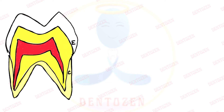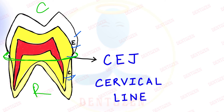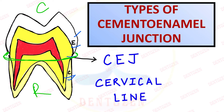Welcome to Dendrozen. C is cementum and E is enamel, and between the two is a junction called the cementoenamel junction (CEJ). This junction divides the crown and root of the tooth at the cervix, or neck of the tooth, and is also called the cervical line. This can be an important theory exam question - you may be asked about the types of cementoenamel junction as a short note.